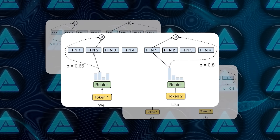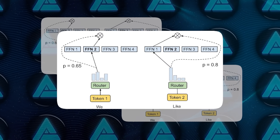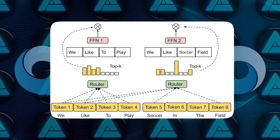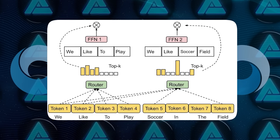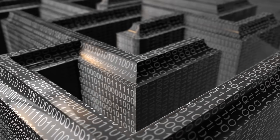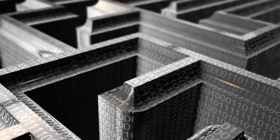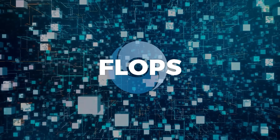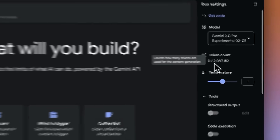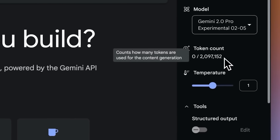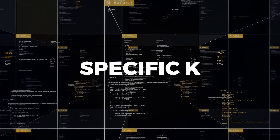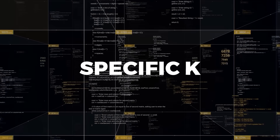The approach involves a per-token router that produces a scalar weight for each token in a sequence. The top K tokens, according to those weights, get processed as usual by that transformer block's self-attention and MLP, while the rest skip around that block in a less expensive route. This leads to a substantial reduction in flops, since not every single token is treated equally. The entire procedure keeps a static computation graph because the capacity is preset to a specific K, ensuring that hardware utilization remains efficient.